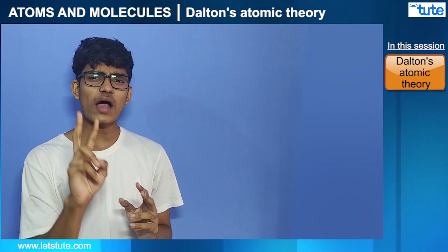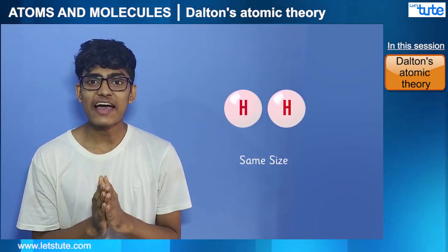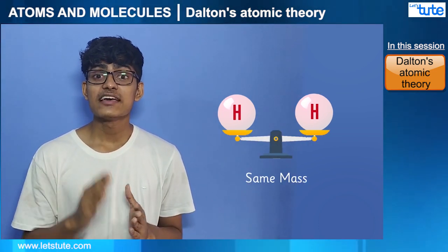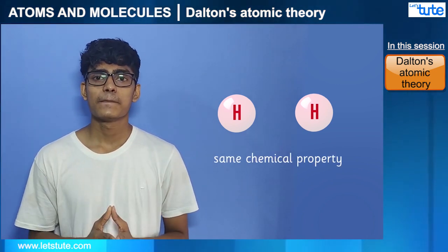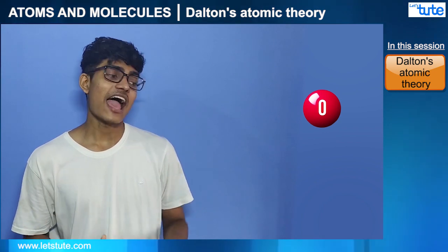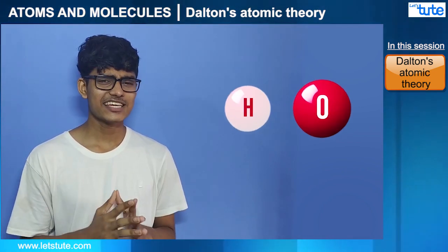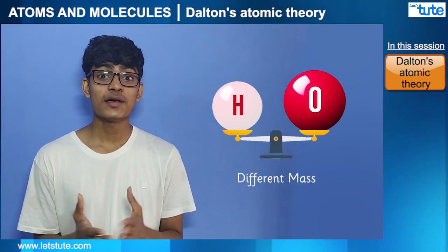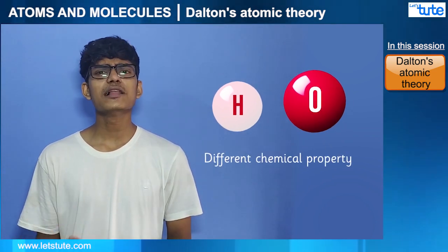Suppose if we took two atoms of hydrogen and looked closely, they have equal size, equal mass, and the same chemical property. But if we take one atom of oxygen and one atom of hydrogen and compare them, they have different size, different mass, and different chemical properties.